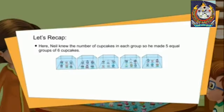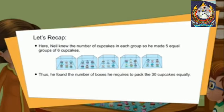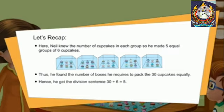Here Neil knows the number of cupcakes in each group, so he made 5 equal groups of 6 cupcakes. Thus he found the number of boxes he requires to pack the 30 cupcakes equally. Hence he gets the division sentence: 30 divided by 6 equals 5.